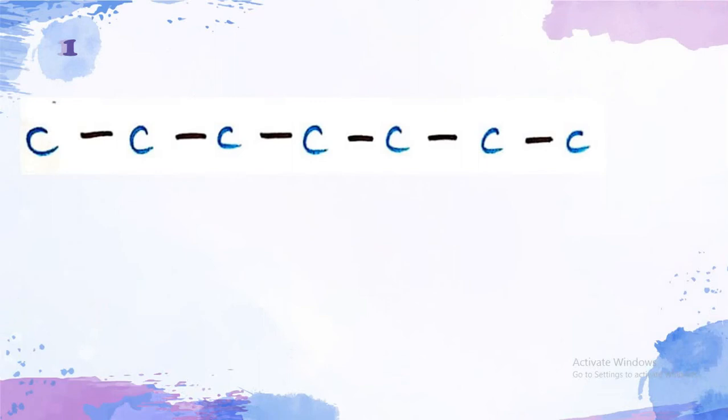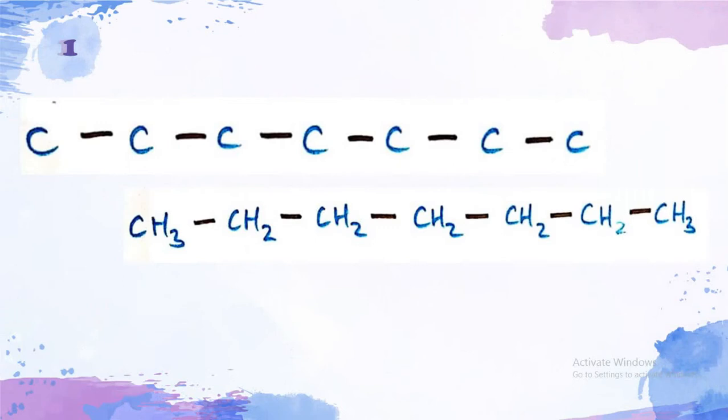And then, we just have to complete the carbon atoms with hydrogen atoms based on how many hands are left that don't bind with any carbon atoms. Let's see the first carbon atom. It binds to one carbon atom, so you need to add 3 hydrogen atoms to it.